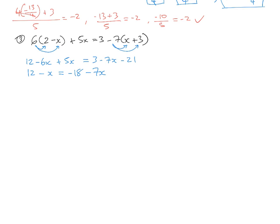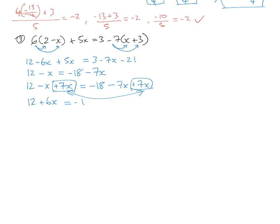We can't solve equations if we've got unknowns on both sides, so we need to get rid of the x on one side. I like to have my x's on the left-hand side, so I need to get rid of this negative 7x on the right-hand side. What's the opposite of taking 7x? Adding 7x. So I need to add 7x to both sides to keep it balanced. Negative x plus 7x is positive 6x, and negative 7x plus 7x is 0, so all you've got is negative 18 on the right-hand side.